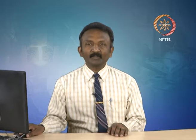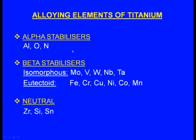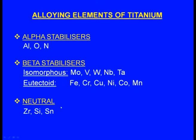Alloying elements of titanium are classified into three categories: alpha stabilizers (aluminum, oxygen and nitrogen), beta stabilizers (molybdenum, vanadium, tungsten, tantalum and so on), and neutral elements (zirconium, silicon and tin).